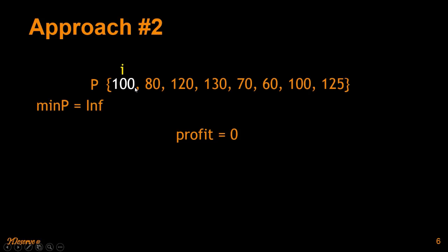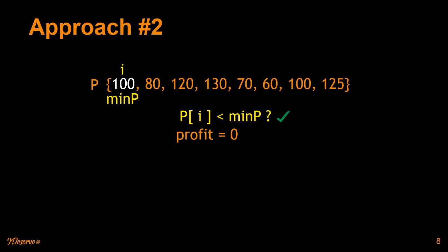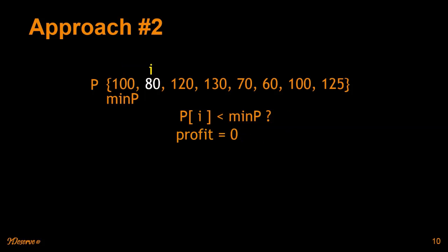The first element is 100. Is 100 less than the minimum buying price? Yes, so we update the minimum buying price to 100. If we buy and sell at 100, the profit is 0, so we don't update the profit. Moving to 80 — the stock price is less than the current minimum buying price, so we update it to 80. If we buy and sell at 80, the profit is again 0, so we don't update the profit.